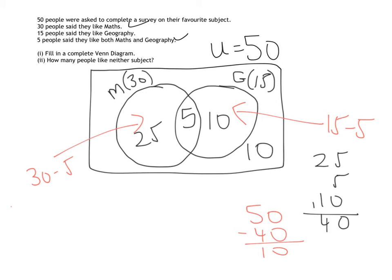So we can answer the second part of this question straight from our Venn diagram. It's asking how many people like neither subject, so we've literally just filled that in to the outside of our universal set, so the answer is 10.